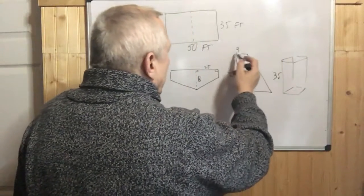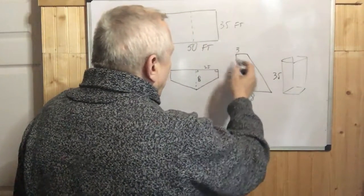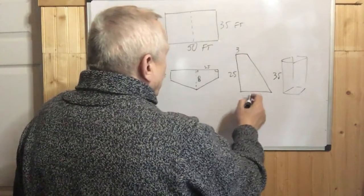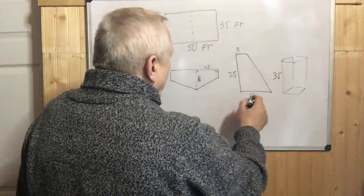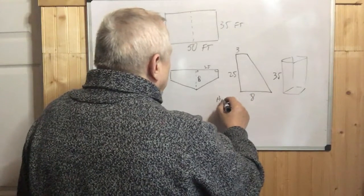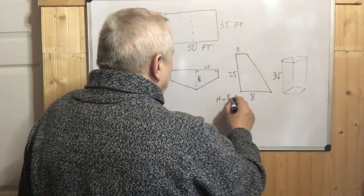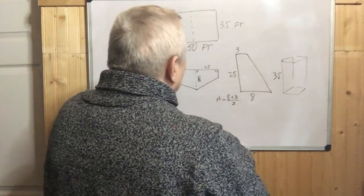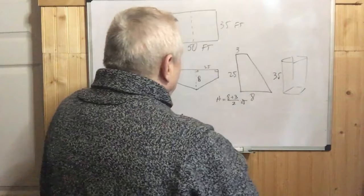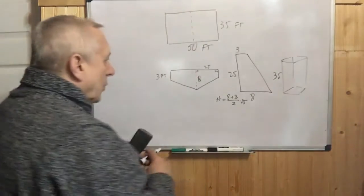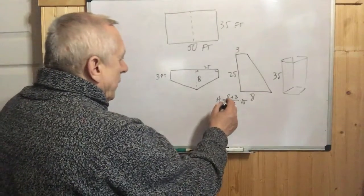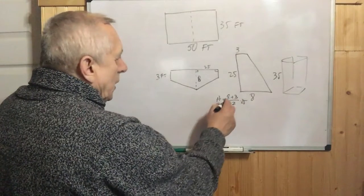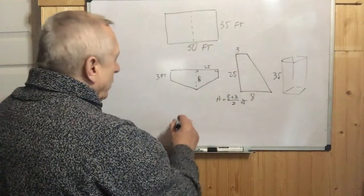The bottom is going to be this trapezoid. We can find the area of this trapezoid adding the bases. The area is (8 + 3)/2 times 25. That will be 8 plus 3 is 11 over 2 times 25. That's 11 times 25, which is 275 over 2.